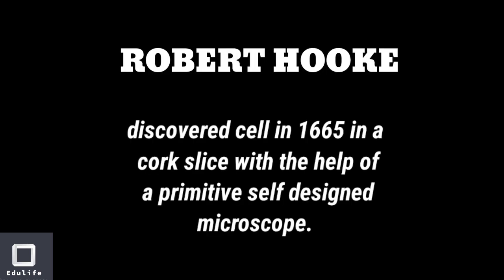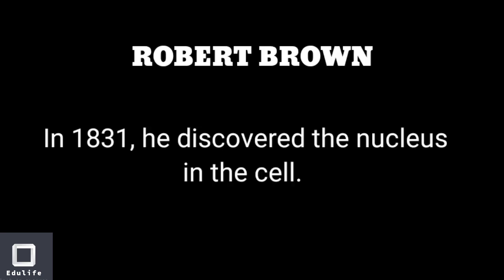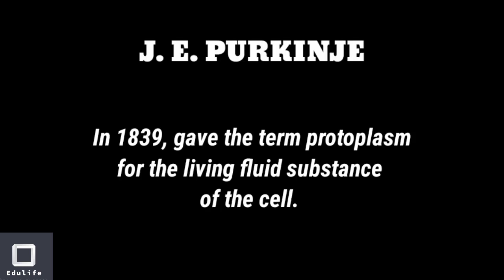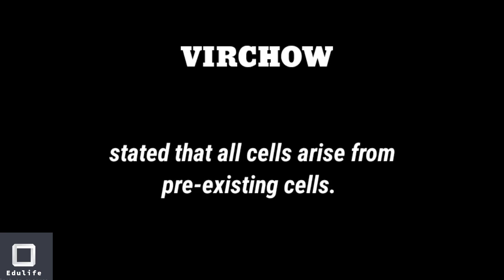Important scientists in cell biology: First, Robert Hooke. Second, Leeuwenhoek, who observed free cells like bacteria for the first time. Third, Robert Brown, who discovered the nucleus in the cell. Fourth, J.E. Purkinje, who gave the name protoplasm for the living fluid substance of the cell. Fifth, Schleiden and Schwann, who proposed cell theory. Sixth, Virchow, who stated that all cells arise from pre-existing cells.